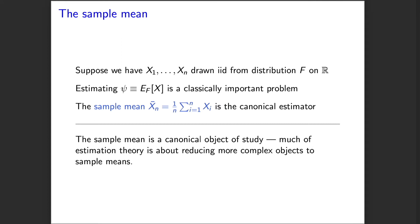A canonical question of great importance in statistics is how do we estimate a population mean? Imagine we have observations drawn independently and identically from an unknown distribution f on the real numbers, and we would like to estimate the expectation of a random variable x drawn from that distribution. With n IID observations, the simplest, most classical, and in many cases best estimator of the population mean is the sample mean.